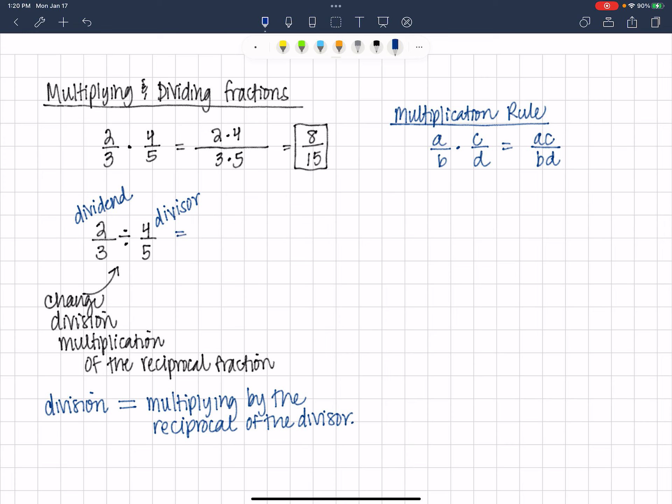So I can keep 2 thirds. I can change 2 thirds divided by to 2 thirds times. So I keep 2 thirds, change division to multiplication, and multiply by the reciprocal of the divider. And now we use our multiplication rule. So once we change that division to multiplication, we go to our multiplying of fractions.